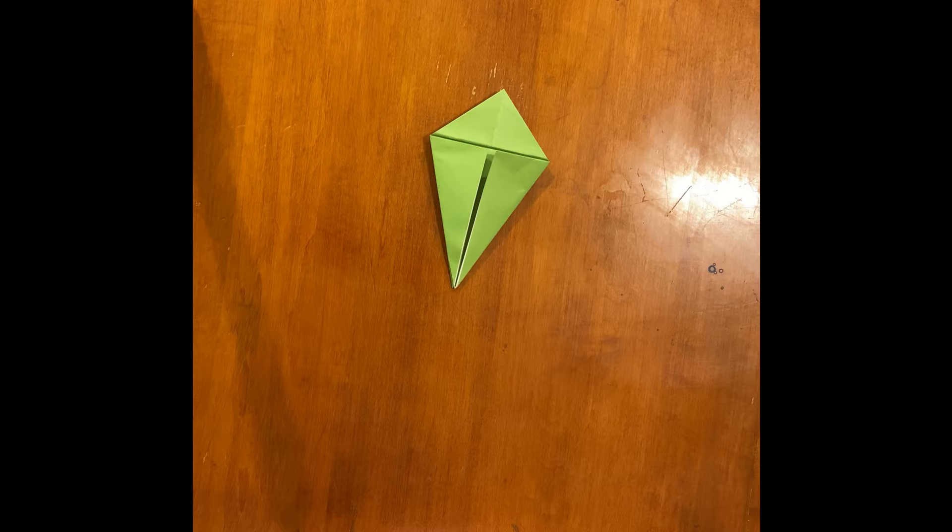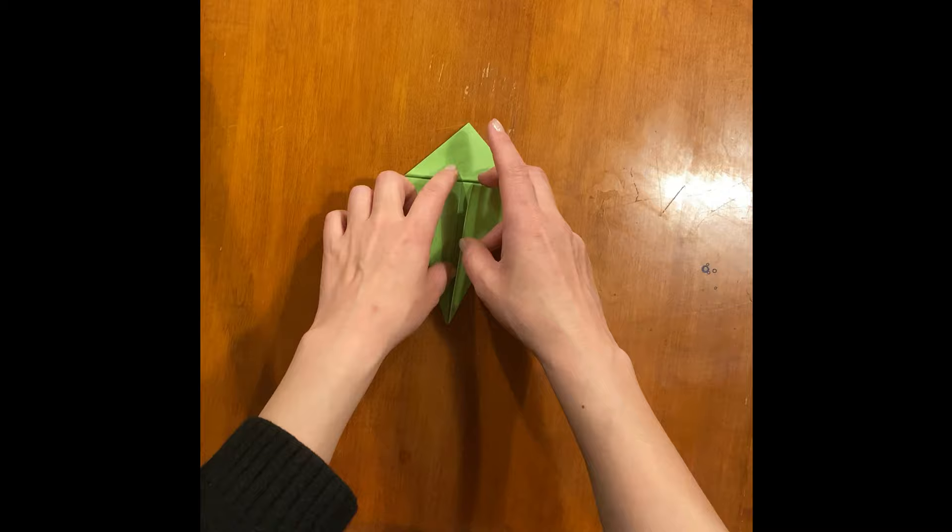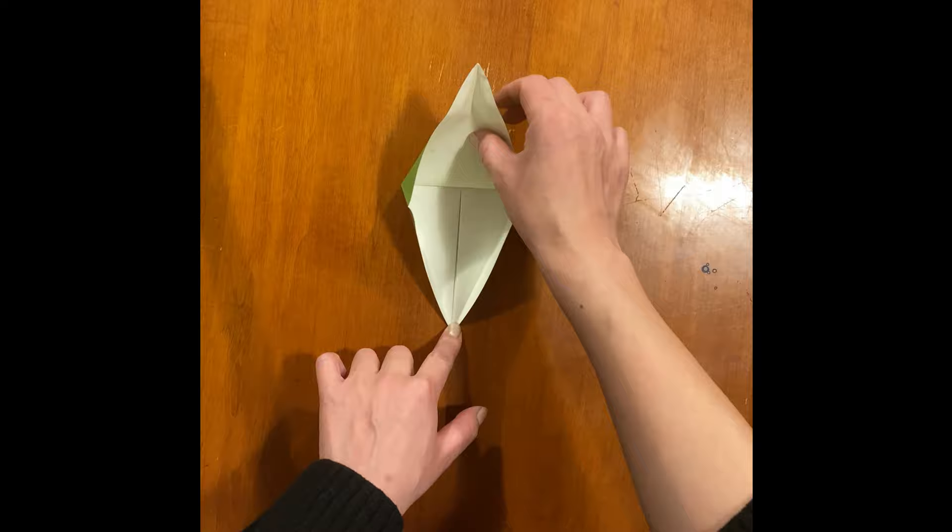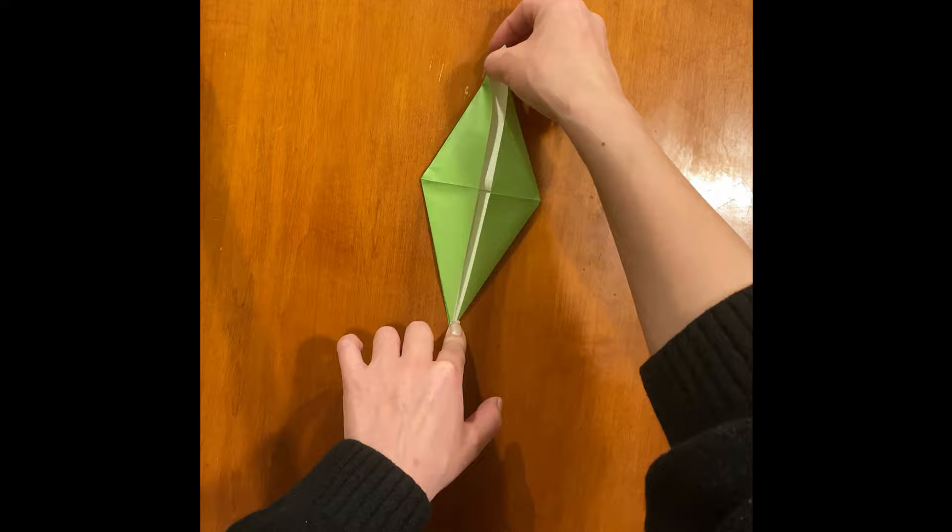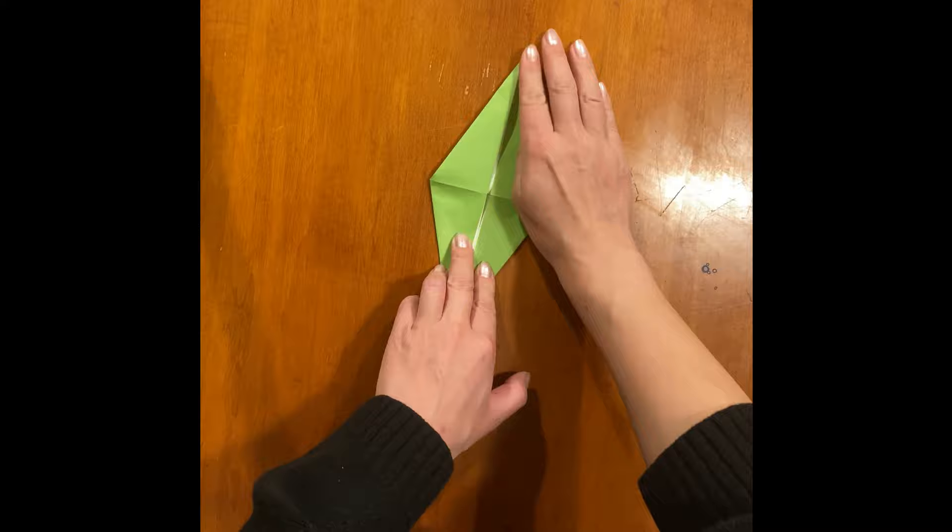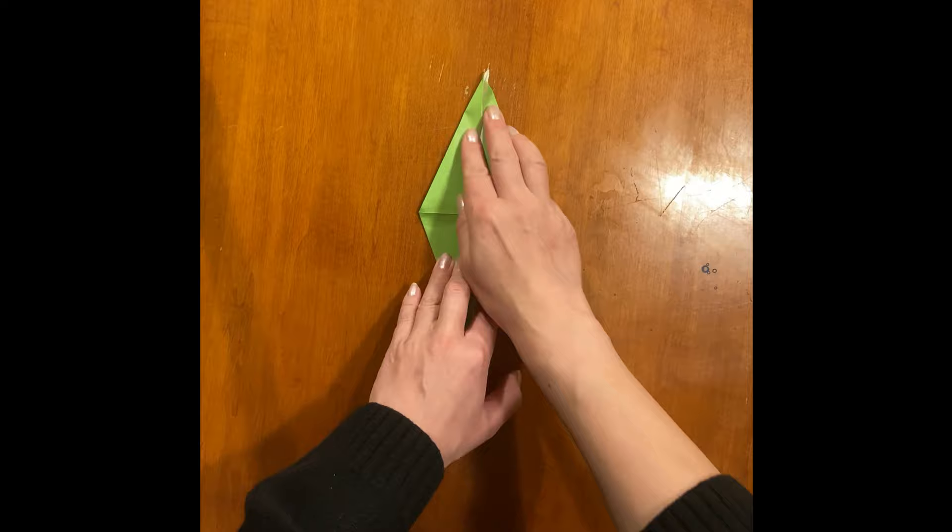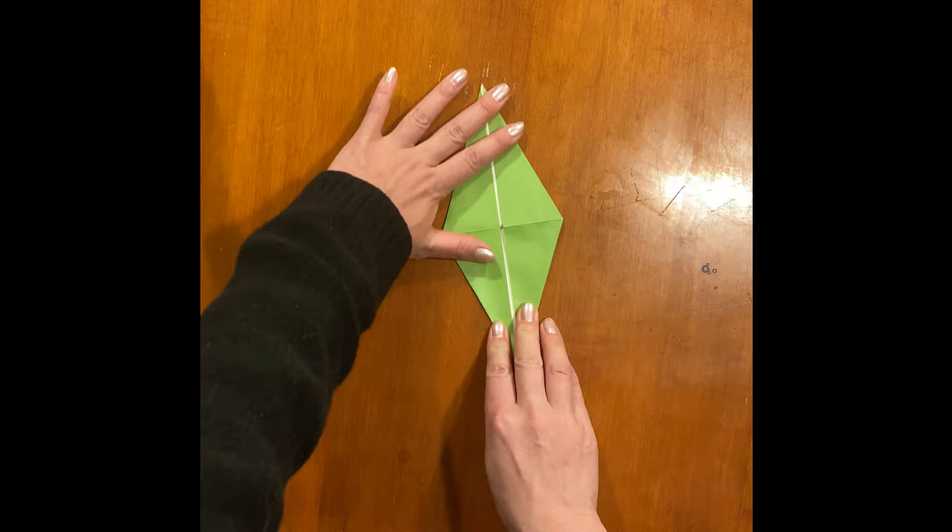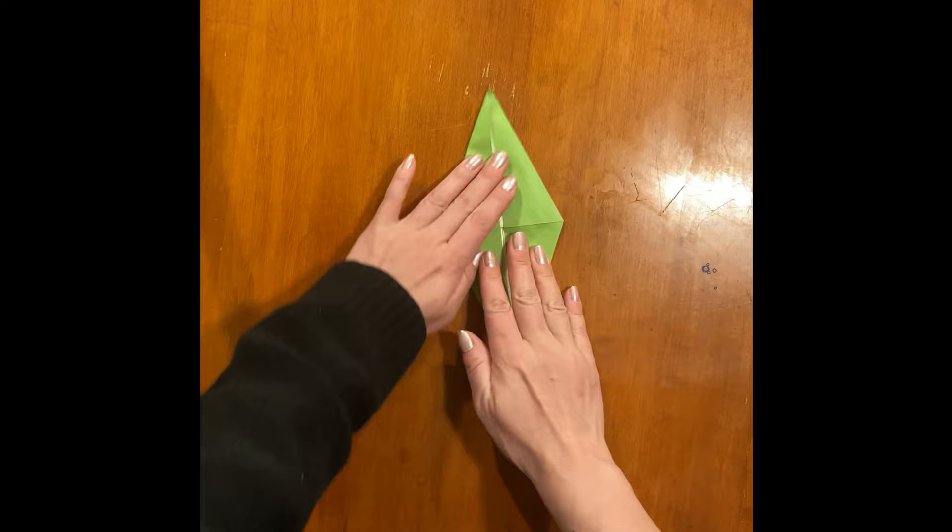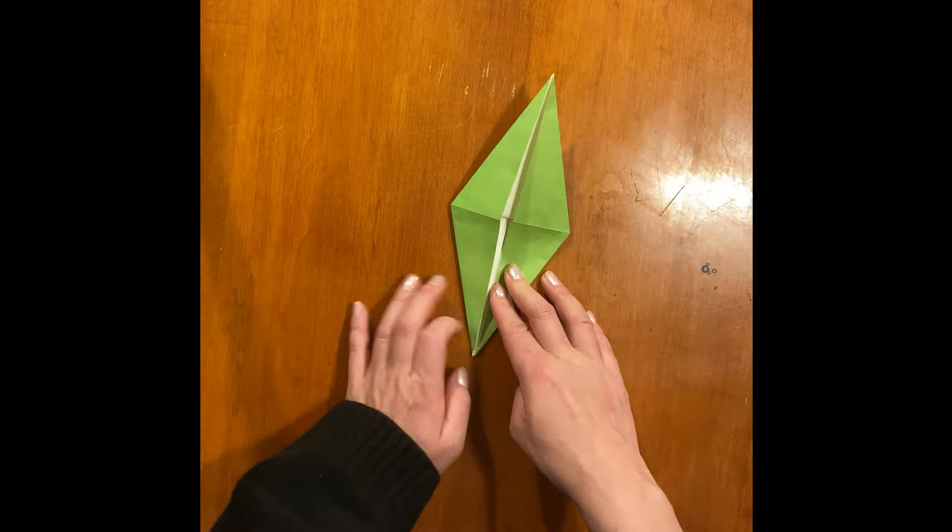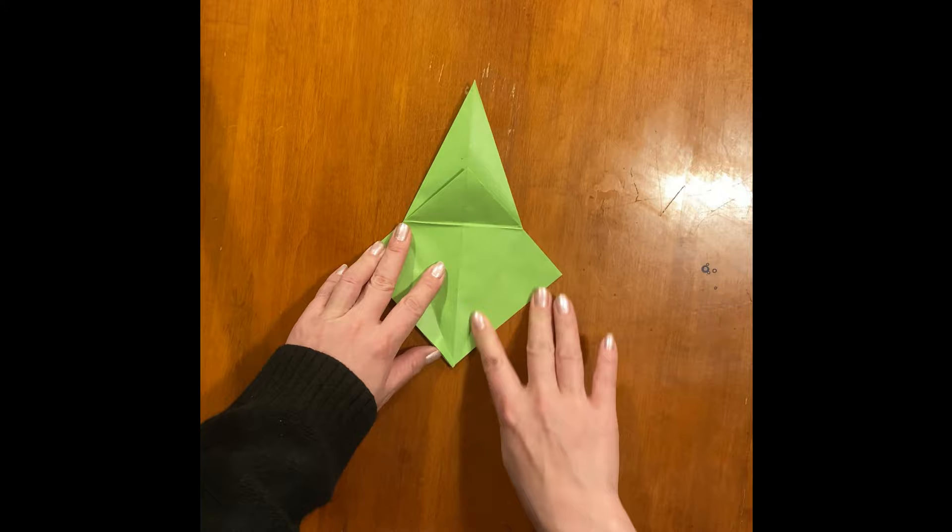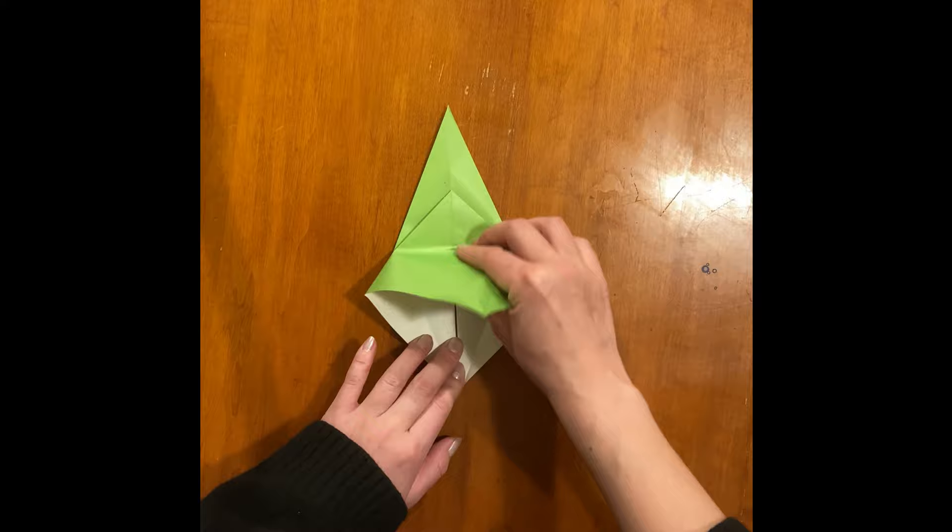Now once you have bent the ice cream cone shape, we will open up what we just folded. Remember, bottom opens up. You can open this bottom all the way to the top, and just follow the line we just made. Do the other side as well, so you flip it and open it up. This is the bottom, bring it up.